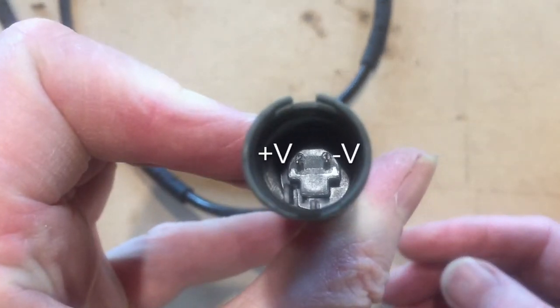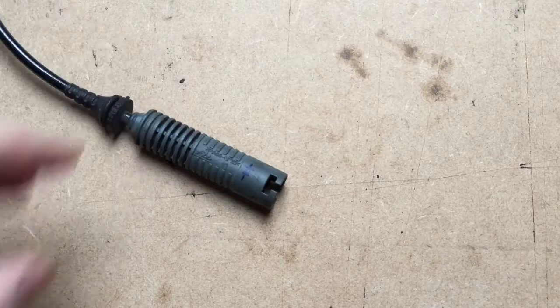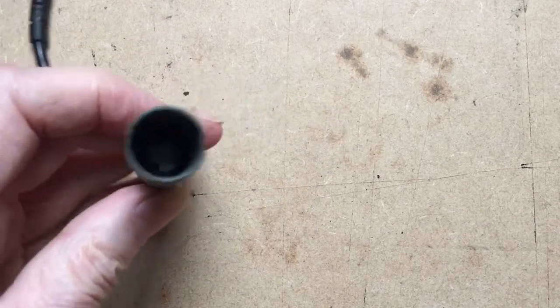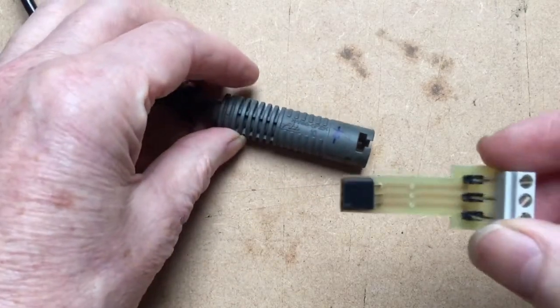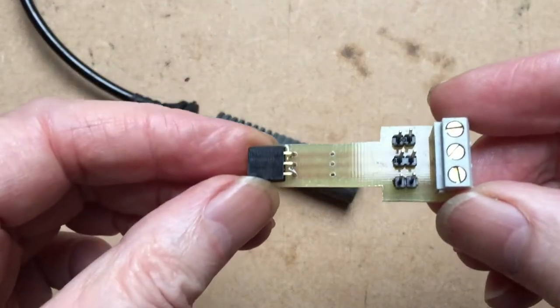This shows the pin connections to the two-wire sensor. This led to a repair of the ABS reluctor wheel, which is the topic of my next video.